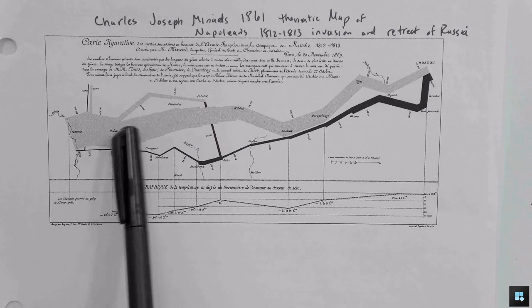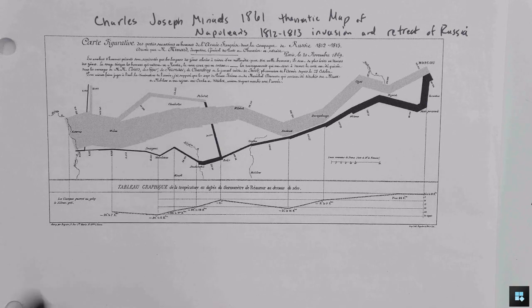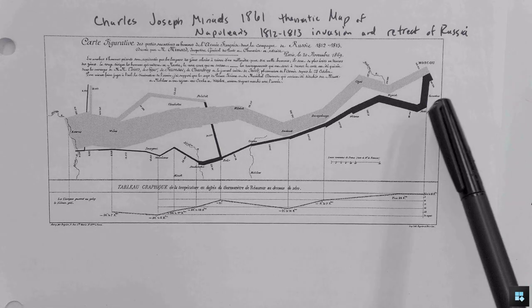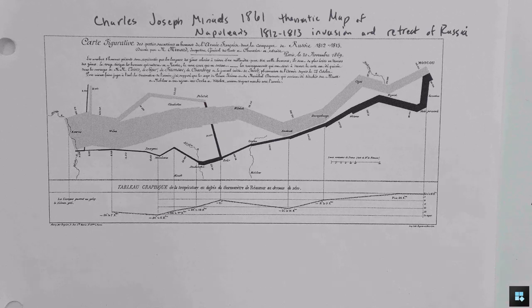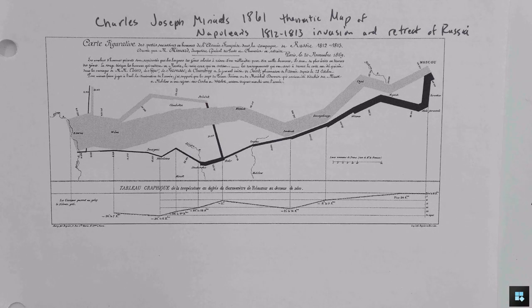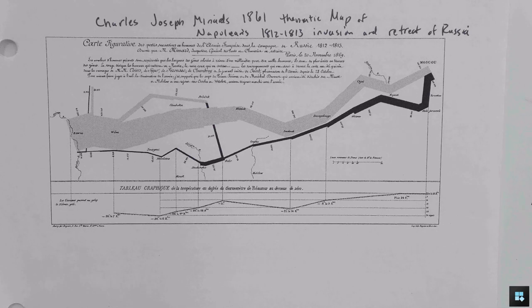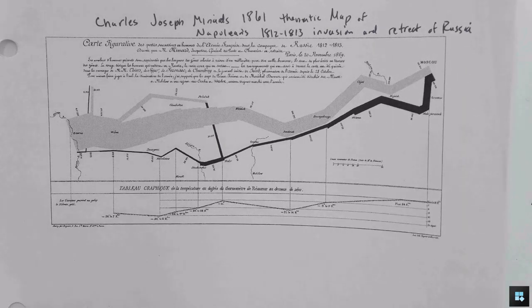So besides showing the different troop locations and their size, this also shows the temperature. So there's little temperatures down here with bars pointing up to the different locations to show the temperatures. And you can see how the temperatures impact the troop sizes. It's very sad. But a wonderful display of all that data. We're not going to get that fancy. We're going to work with histograms and box and whisker graphs. So I think both of those are very nice ways for you to display data.